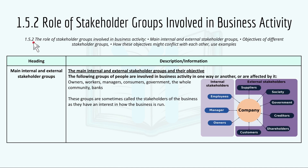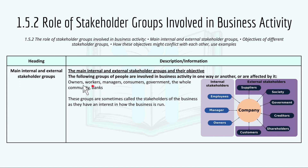Then we have 1.5.2, the role of stakeholder groups involved in business activity. The main internal and external stakeholder groups — the following groups of people are involved in business activity in one way or another or are affected by it: owners, workers, managers, consumers, government, the whole community, and banks. These groups are sometimes called the stakeholder groups of the business as they have an interest in how the business is run.